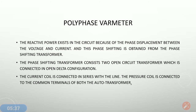The next one is the polyphase VAR meter. We know that reactive power exists in the circuit because of the phase displacement between the voltage and the current, since the in-phase component always produces active power. The reactive power is due to the phase displacement between voltage and current, and this phase shifting is obtained from the phase shifting transformer. The phase shifting transformer of the polyphase VAR meter consists of two open circuit transformers connected in open delta configuration. The current coil is connected in series with the line and the pressure coil is connected to the common terminal of both transformers.